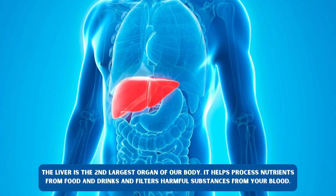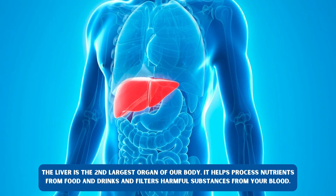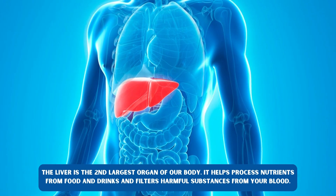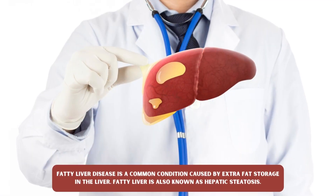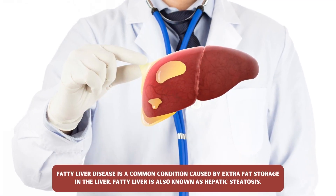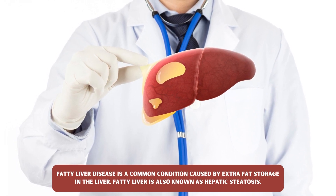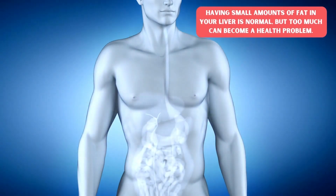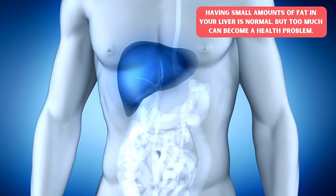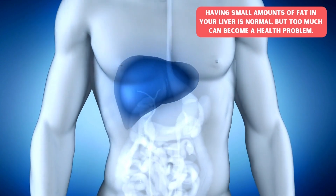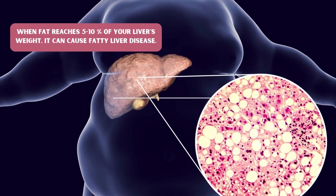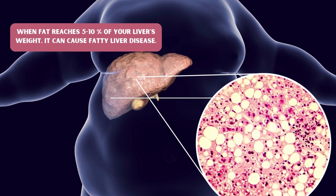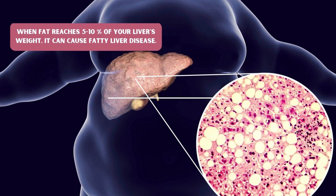The liver is the second largest organ of our body. It helps process nutrients from food and drinks and filters harmful substances from your blood. Fatty liver disease is a common condition caused by extra fat storage in the liver, also known as hepatic steatosis. Having small amounts of fat in your liver is normal, but too much fat can become a health problem. When the fat reaches 5-10% of your liver's weight, it can cause fatty liver disease.